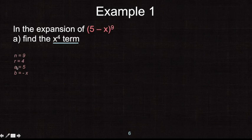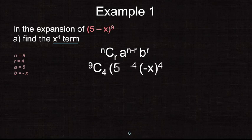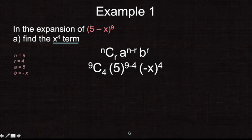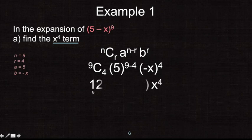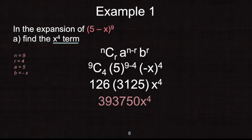Using the formula: combination of 9 taken 4, multiplied by 5 to the power of 9 minus 4, multiplied by negative x to the power of 4. Since we want x to the power of 4, the second term must be raised to the power of 4, so r equals 4. Evaluating and taking the product of the coefficients gives the x to the power of 4 term: 393,750x to the power of 4 — including both numerical and literal coefficient.